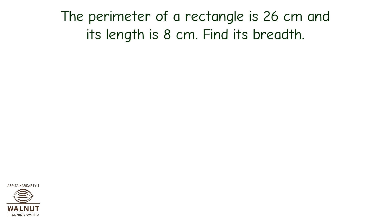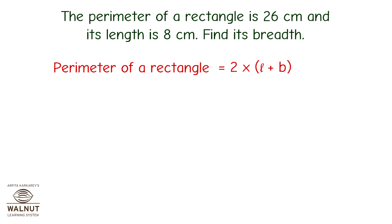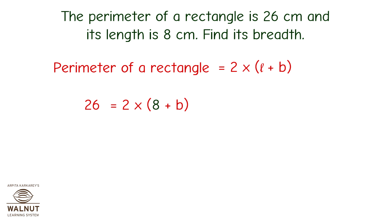Let's write the formula first. Perimeter of a rectangle is equal to 2 multiplied by length plus breadth. We know the perimeter and its length, so let's put these values in the formula. So it will become 26 is equal to 2 multiplied by 8 plus b.